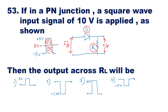Remembering the working of a diode — that is a PN junction — a diode will conduct only when its anode is positive with respect to cathode. This terminal is called the anode and this terminal is the cathode. If the anode is more positive with respect to cathode, the diode conducts, current passes through it, and that current passing through RL will develop a voltage across RL.